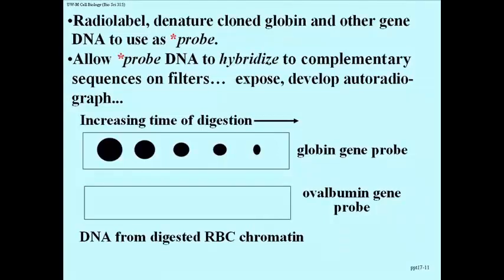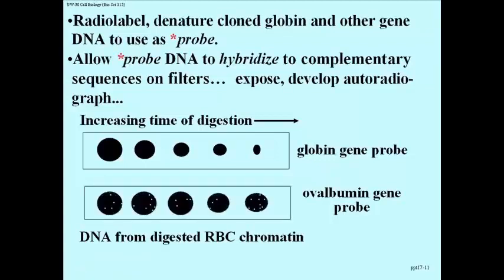Here's the control. Chickens make ovalbumin, which is egg white protein — that's made in the oviduct, not in a red blood cell. So you'd assume the ovalbumin gene in a red blood cell is in heterochromatin because it's not expressed there and should be packed up and put away. What you'd expect is that no matter how long you digest red blood cell chromatin, there will always be a fair amount of ovalbumin gene left behind — and that's exactly what you see. When the inverse experiment is done using chromatin from oviduct tissue, probed with the globin gene or the ovalbumin gene probe, it's the ovalbumin gene that disappears quickly over time of digestion, whereas the globin gene remains roughly at the same amount in each of the oviduct tissue chromatin digests.